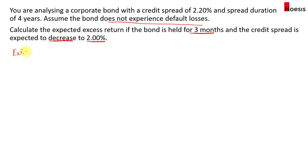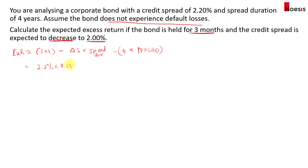Using the same formula — spread times holding period, minus change in spread times spread duration, minus holding period times PD times LGD — the spread is still 2.2% times the 3-month holding period. The spreads will go from 2.2% to 2% and then multiply by 4. The third component will be 0 since we do not experience any default losses. So the first component gives us 0.55%, same as the previous example.